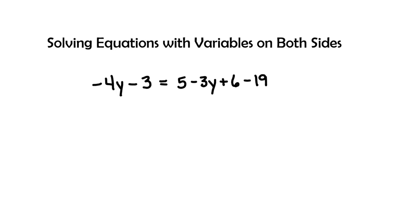So we're noticing that on this right hand side we have a lot of numbers or constants that we can combine together. And so we're going to combine like terms and so we have a negative 19, a positive 6, and a positive 5.